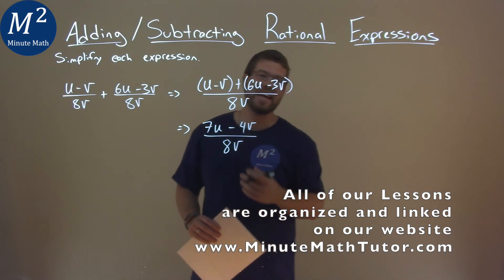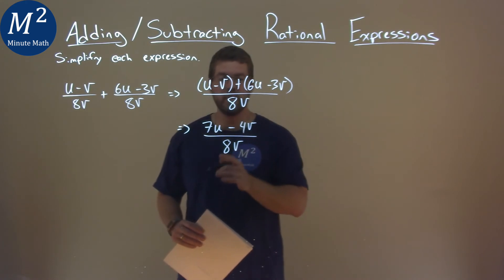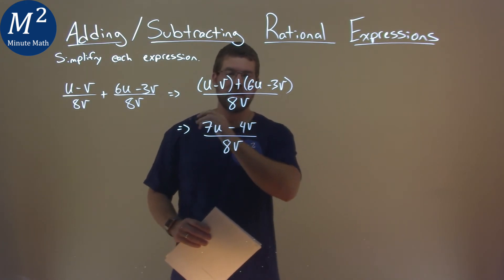And from there, we really can't simplify any more. So, our final answer here is 7u minus 4v over 8v.